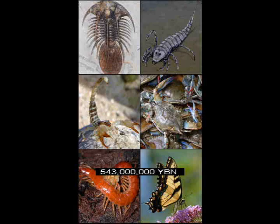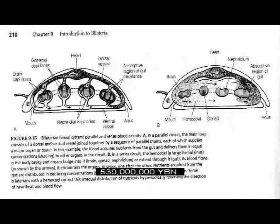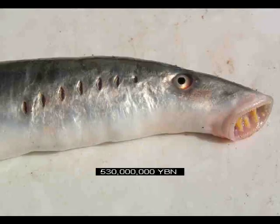Segmentation. Arthropods — insects, crustaceans. Mollusks. Heart. Vertebrates — ancestor of most fish and all amphibians, reptiles, mammals, and birds.